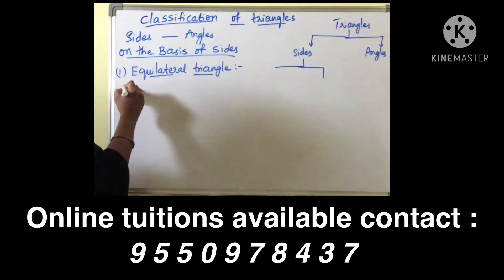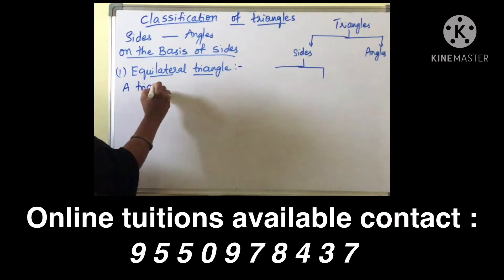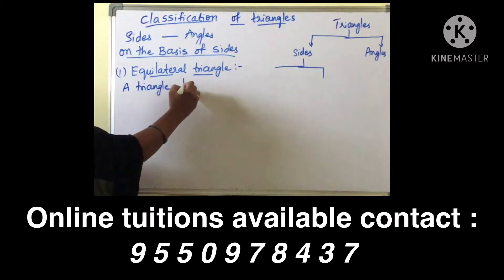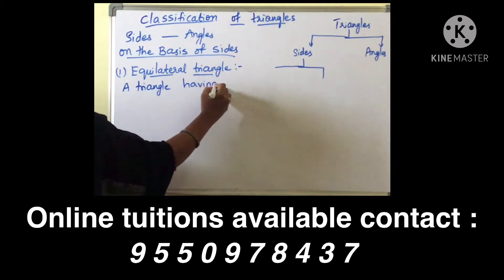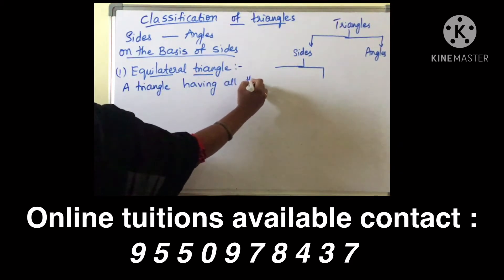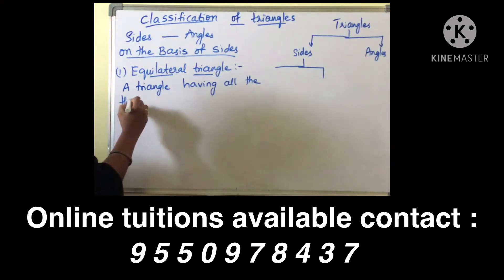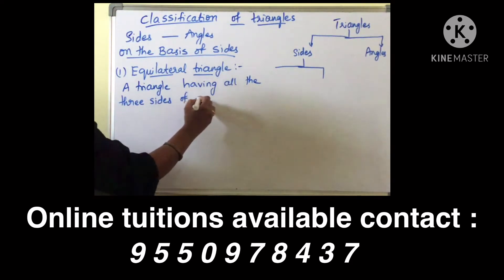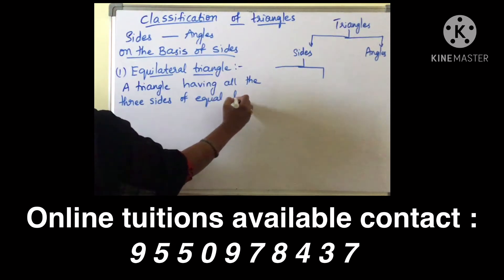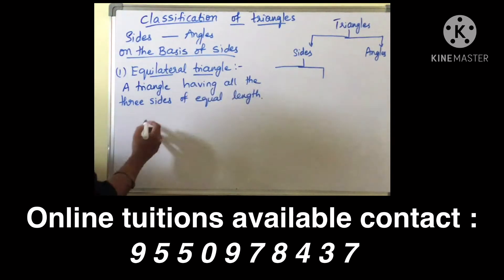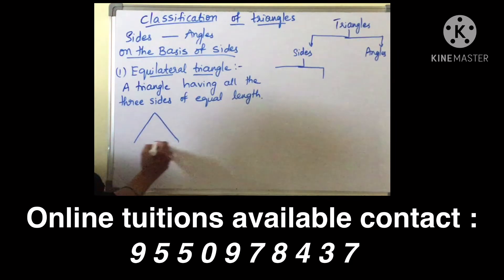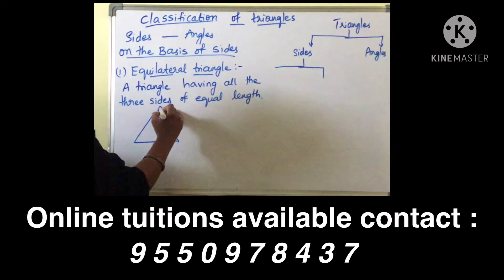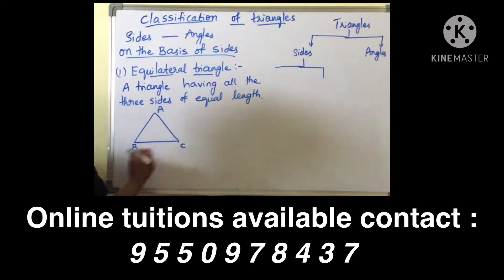Coming to the definition: a triangle having all the three sides of equal length. So for example, here is a triangle — it is a closed figure formed by three line segments. Suppose this is A, this is B, this is C.